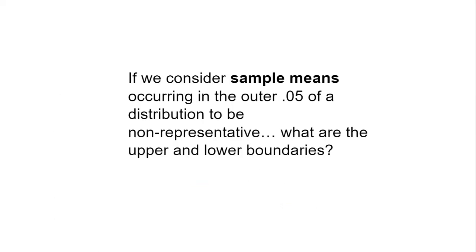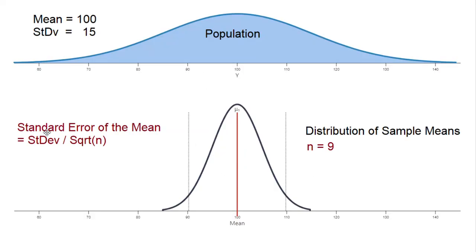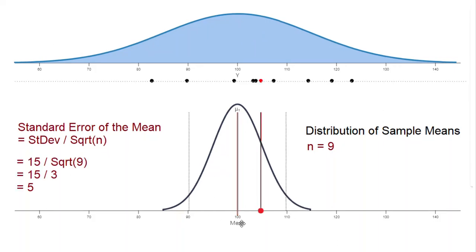Now let's consider the distribution of sample means. If we consider sample means occurring in the outer 0.05 of a distribution as non-representative, what are the upper and lower boundaries? Remember the standard error of the mean — we calculate it as the standard deviation divided by the square root of n. Let's say we're working with a sample size of 9, meaning every time we want a sample mean, we randomly select 9 values, calculate their average, and report that average. The standard error of the mean is 15 divided by the square root of 9, which is 15 divided by 3, giving us a standard error of 5.